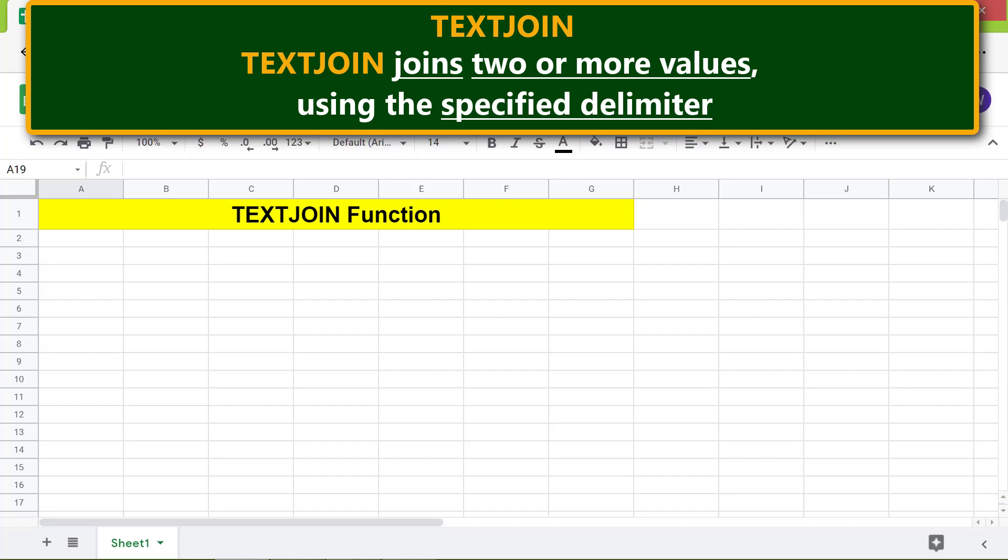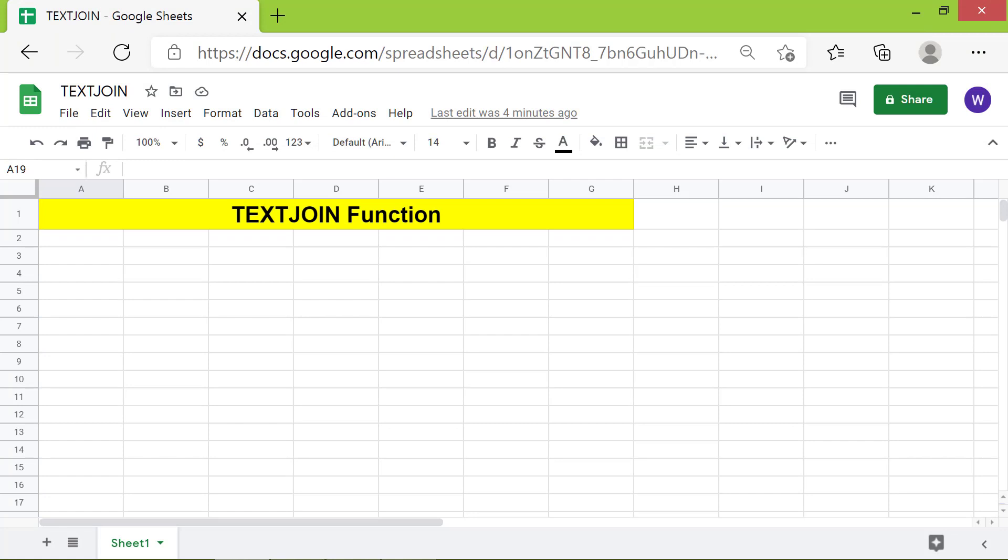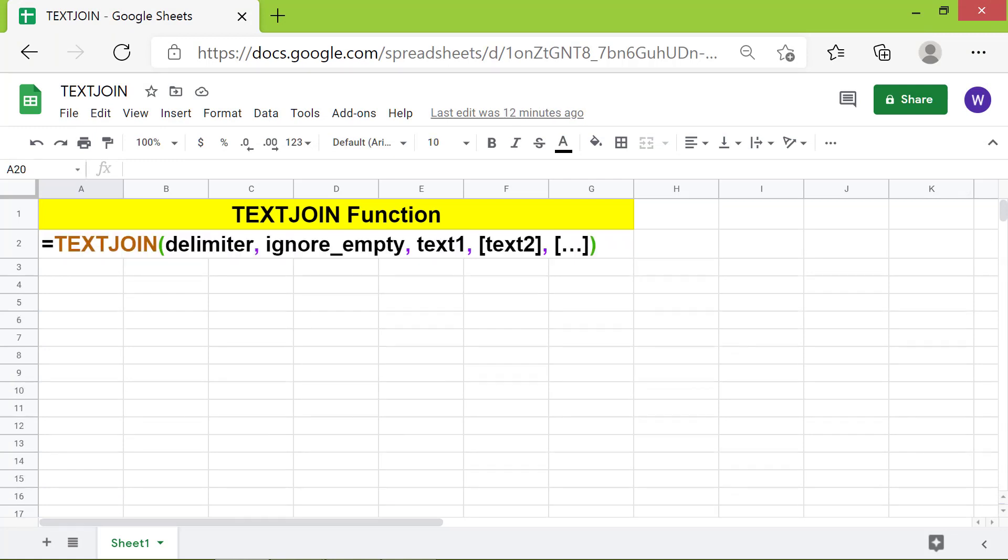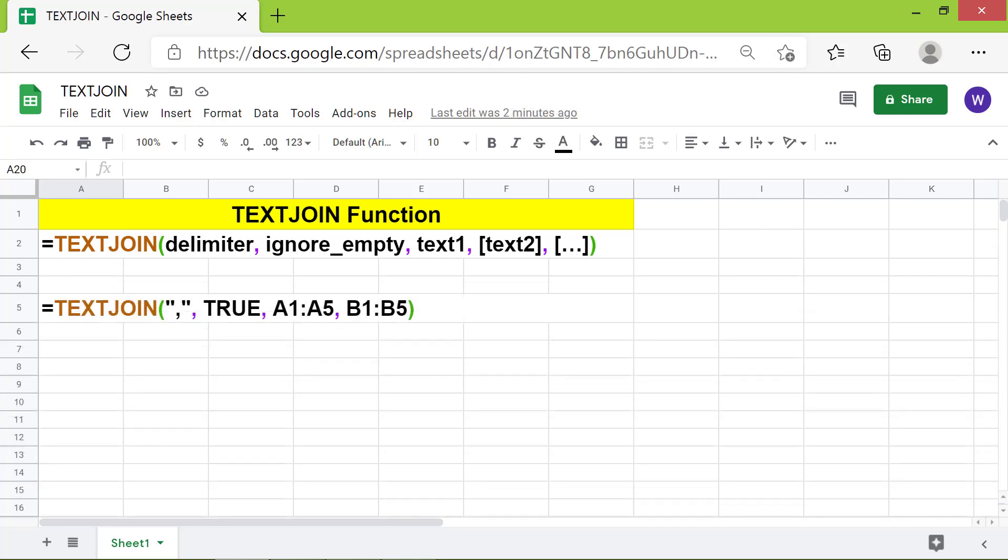Let's look at the format of the TEXTJOIN function formula. Here's an example. Delimiter is the string which separates one value from another.